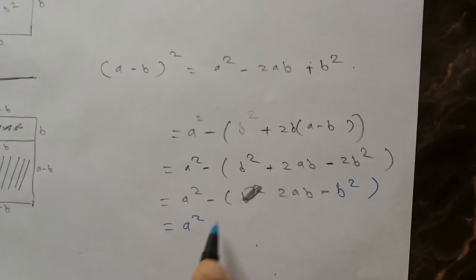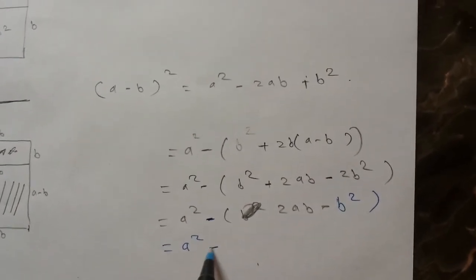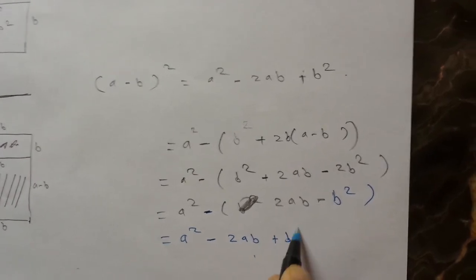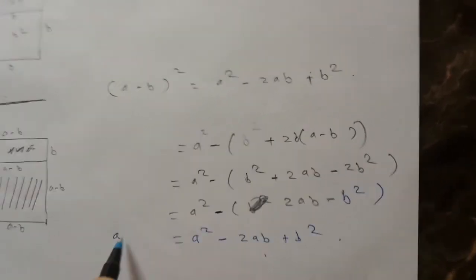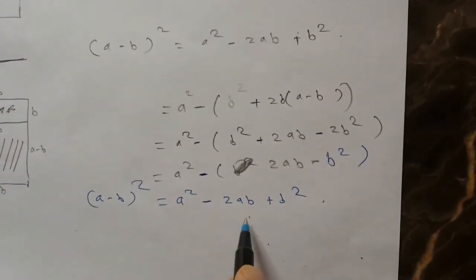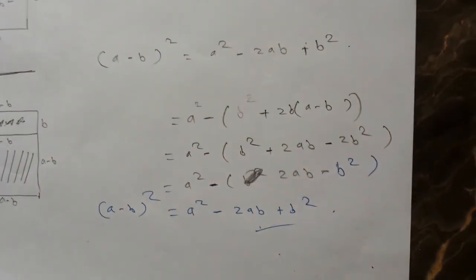So you have a squared — if you convert the negative sign inside, you get minus 2ab plus b squared. So (a minus b) squared is equal to a squared minus 2ab plus b squared, and that proves the theorem.